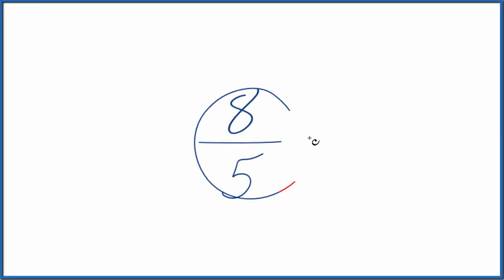Let's write the fraction 8 fifths as a mixed number in simplest terms. So here's how we do that. We're going to divide 8 by 5.